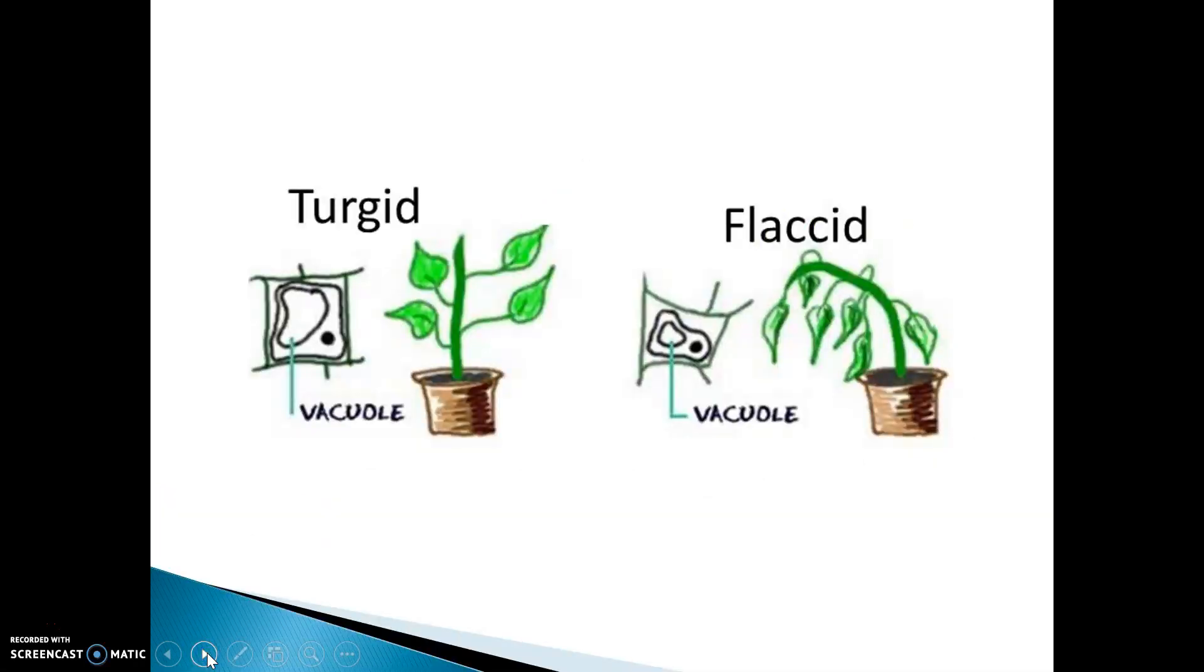Take a moment to look at this picture. The plant on the left side is healthy and standing upright. On the right side, the same plant is wilted. Why? If you're thinking it's because of a vacuole, you're starting to think like a science pro. Here, let's take a closer look.